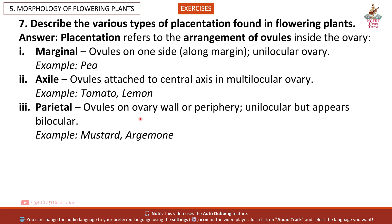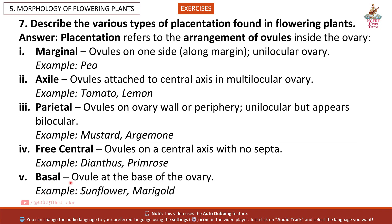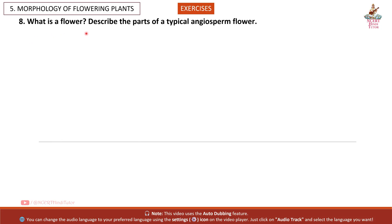3. Parietal: ovules on ovary wall or periphery, unilocular but appears bilocular. Example: mustard, Argemone. 4. Free central: ovules on a central axis with no septa. Example: primrose. 5. Basal: ovules on the base of the ovary. Example: sunflower, marigold.